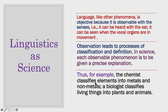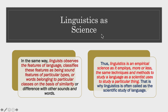For example, a chemist classifies elements into metals and non-metals; a biologist classifies living things into plants and animals. In the same way, the linguist observes the features of language and classifies them as sound features of particular types, or words belonging to particular classes, based on similarity or difference. Thus, linguistics is an empirical science, employing more or less the same techniques and methods to study language as a scientist uses to study a particular thing.